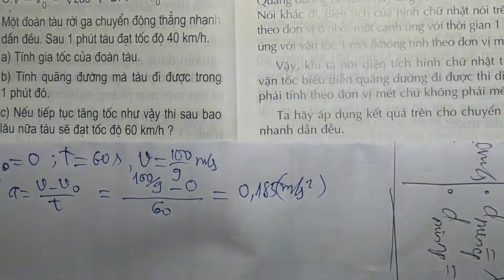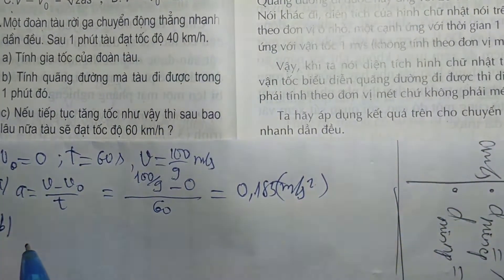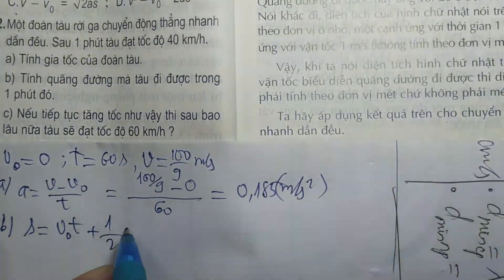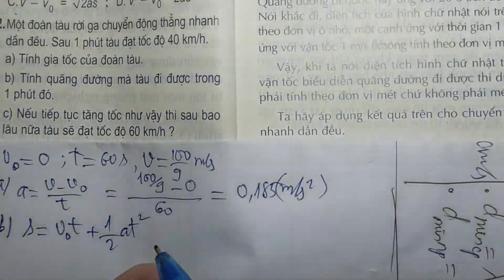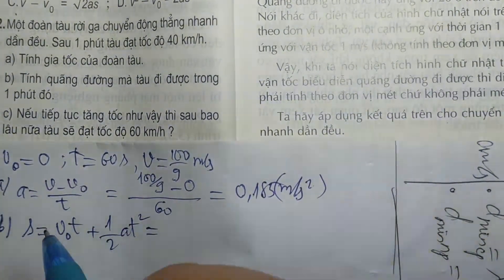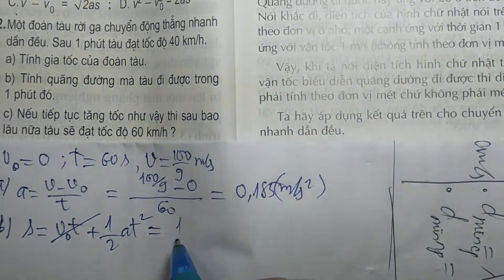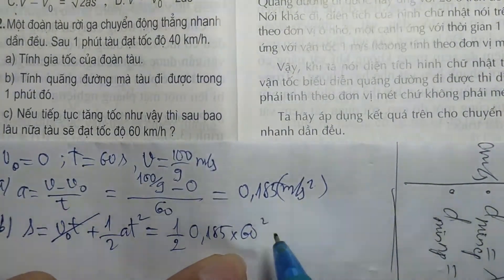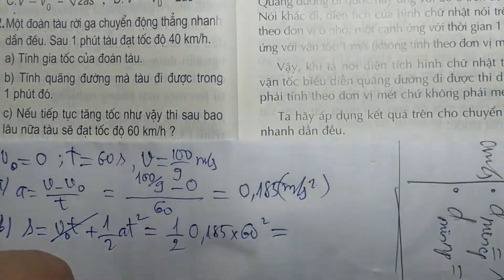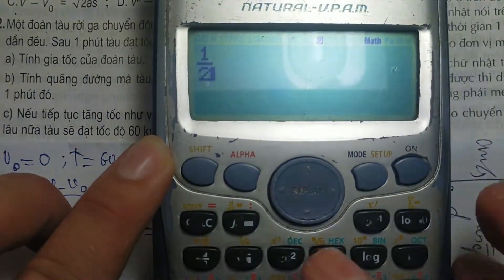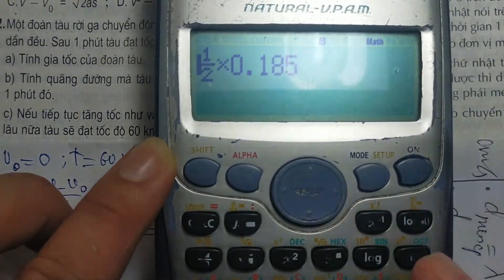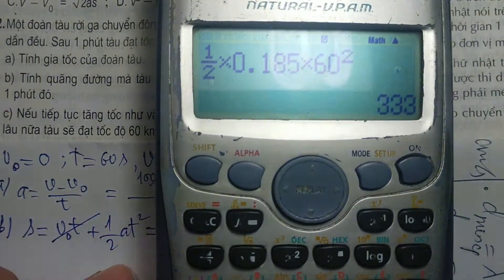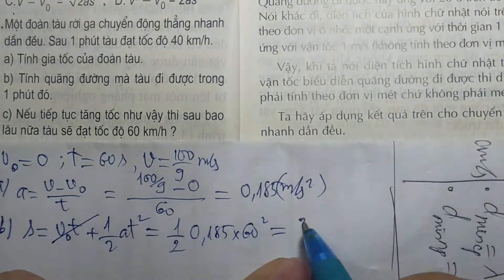Câu B: Tính quãng đường đi được trong 1 phút. Dùng S bằng V0T cộng 1 phần 2 A nhân T bình. V0 bằng 0 nên số hạng đầu triệt tiêu. S bằng 1/2 nhân 0,185 nhân 60 bình. Bấm máy ra S bằng 333 m.